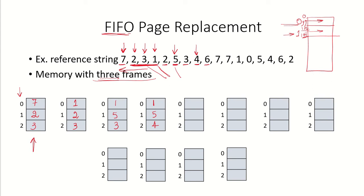Reference is now for page 6. Page 6 is not there so it causes a page fault. Looking at pages 1, 5, and 4: page 4 was brought here, page 5 was brought here, and page 1 was brought in the earliest. So page 6 will be put in place of page 1, giving us pages 6, 5, and 4. Next, there is a reference to page 7 — another page fault. Looking at when the pages were brought: page 6 most recently, then page 4, and page 5 was brought earliest, so page 5 will be replaced by page 7, giving us pages 6, 7, and 4.